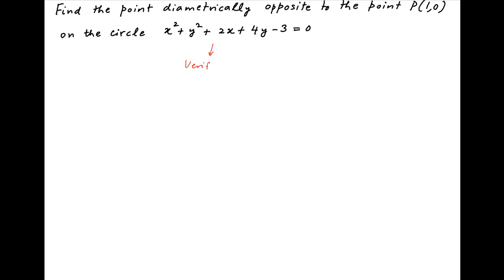We start by verifying if the point P with coordinates (1,0) actually lies on the equation of the given circle. Putting x equals 1 and y equals 0, the left-hand side of the equation of the circle is equal to 1 square plus 0 plus 2 times 1 plus 0 minus 3, which simplifies to 0, which is the right-hand side of the equation. Therefore, the point P does lie on the given circle.